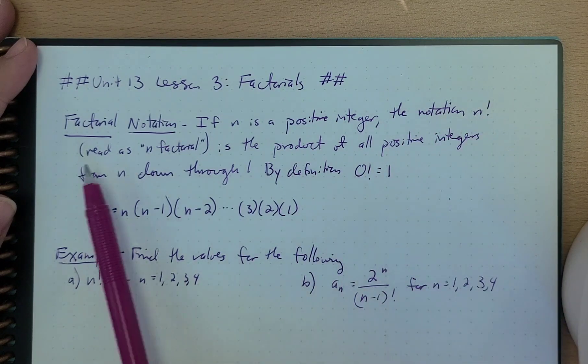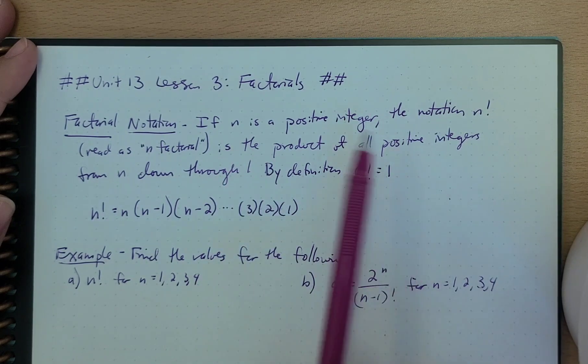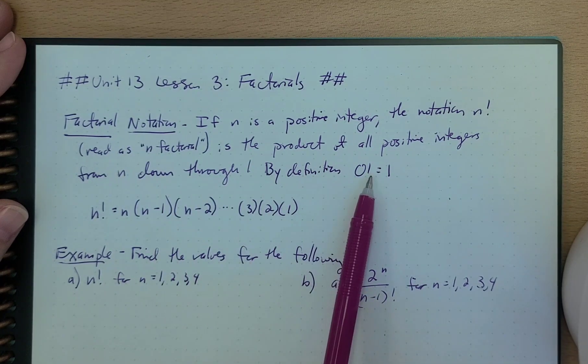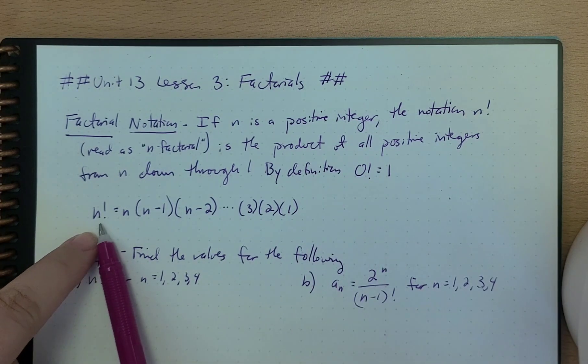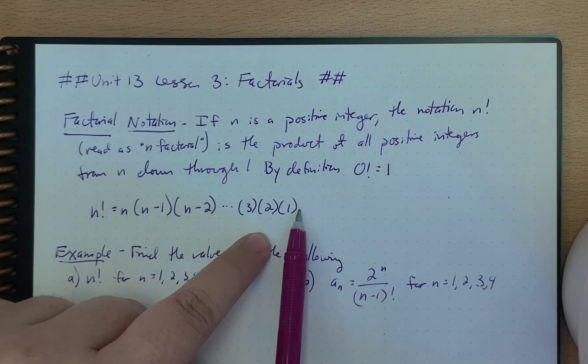n with an exclamation point, but we read it as n factorial, that's actually the product of all the positive integers from n down to 1. And just so you know, by definition, 0 factorial is equal to 1. So n factorial is n times n minus 1 times n minus 2 times 3 times 2 times 1.